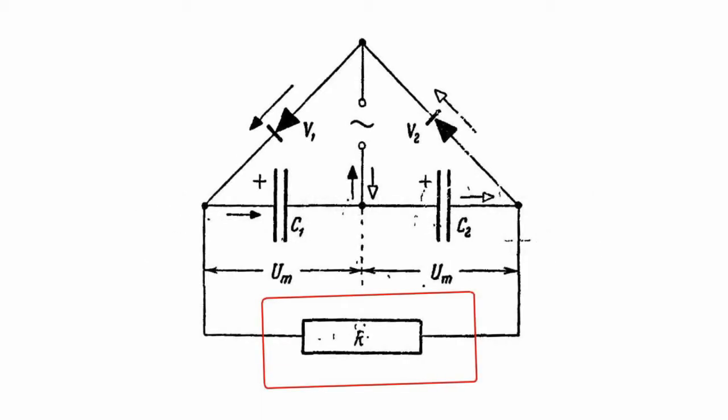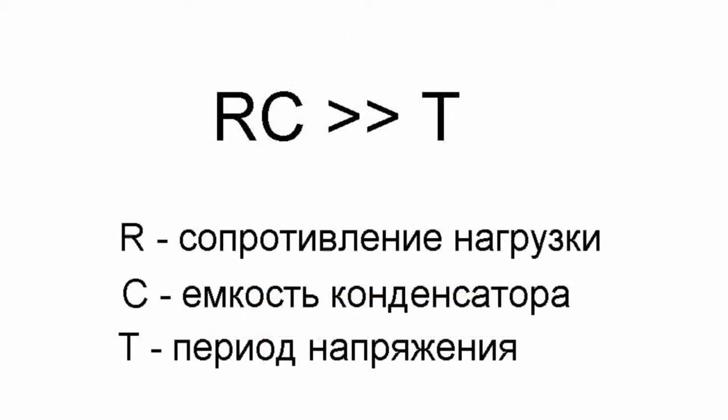Capacitors may discharge only to load R. On the condition that the multiple of the load resistance and the capacitor's capacity by far exceeds the AC voltage cycle, voltage changes will be very small.